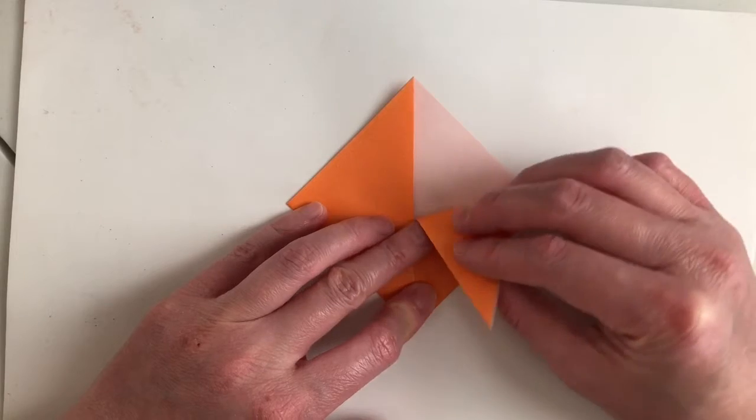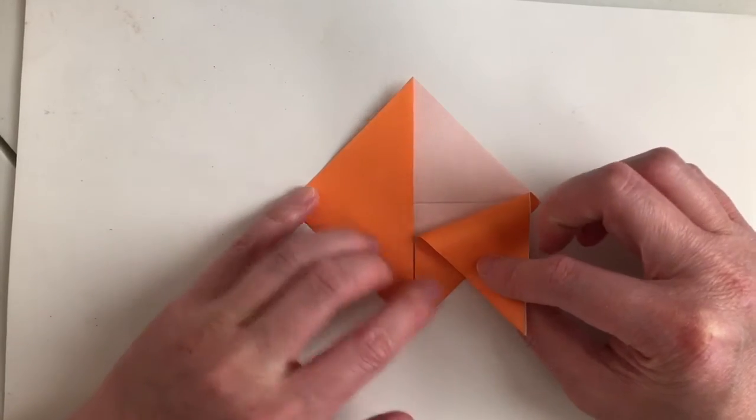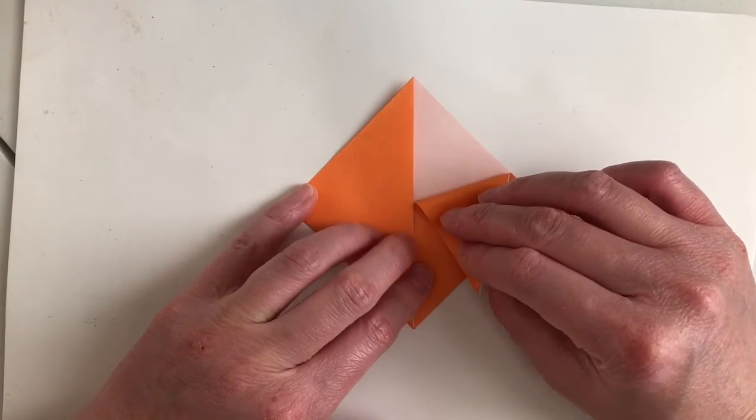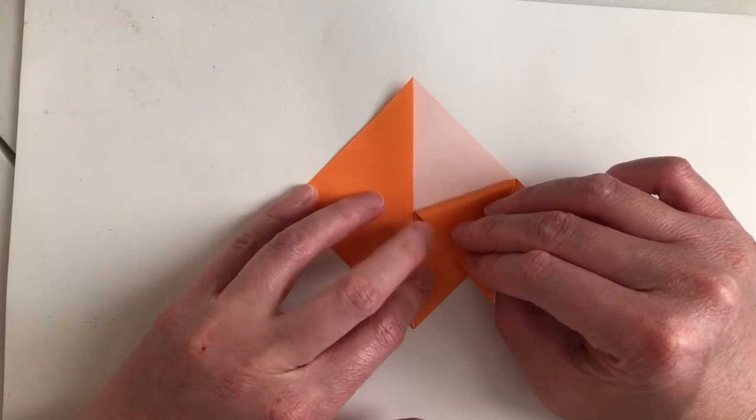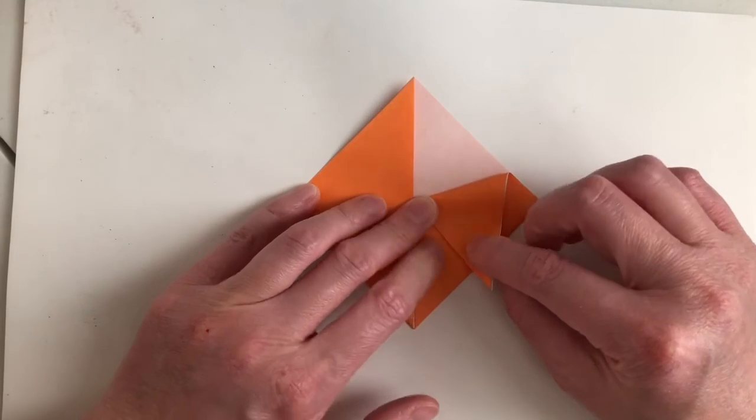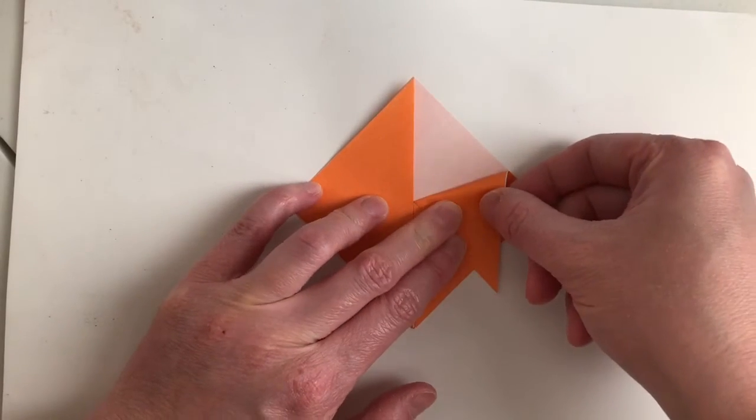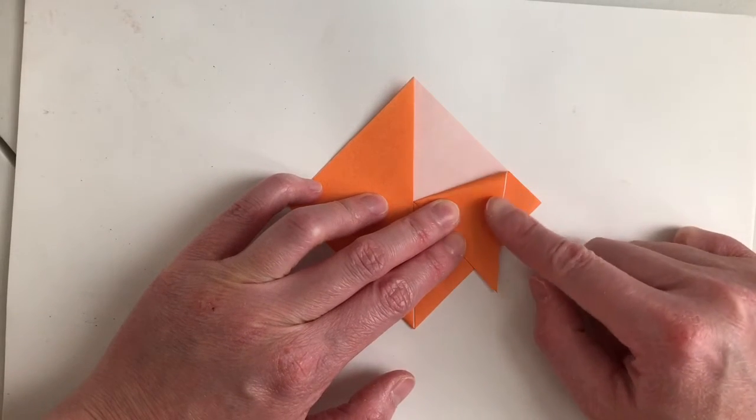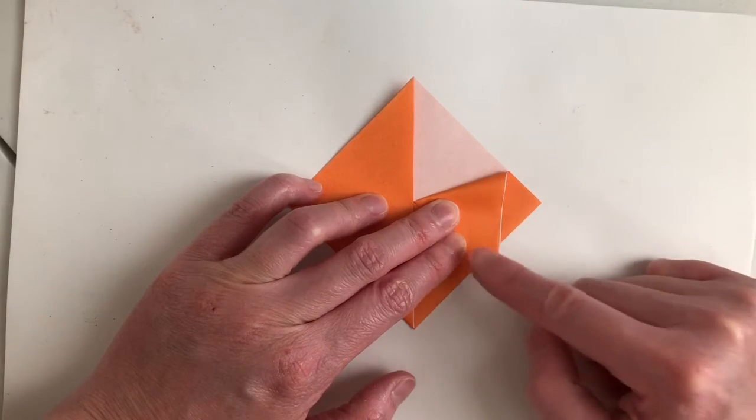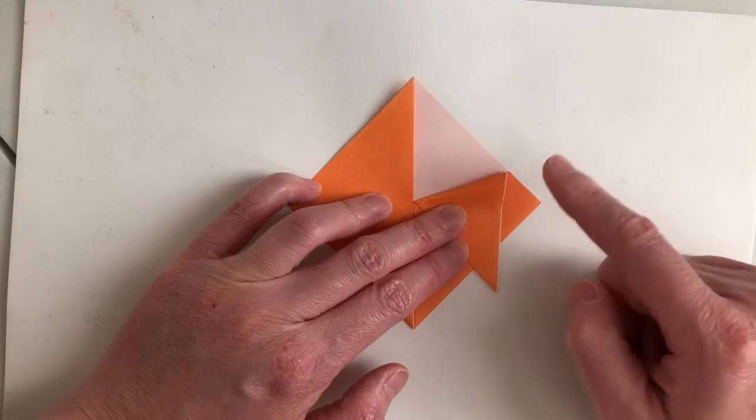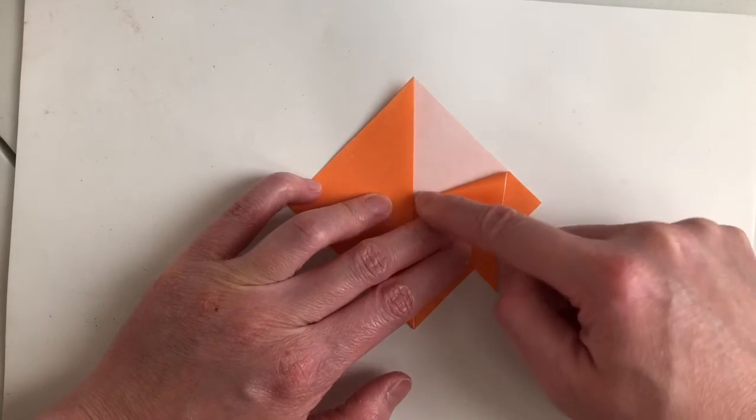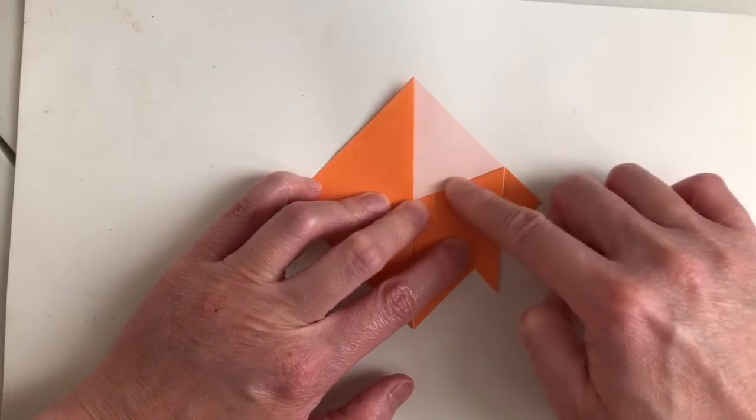This next step is a little tricky. We're going to want to make a fold that goes from this middle part. And we want this particular edge to be straight up and down. As much as possible make it straight up and down and then make your crease.